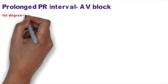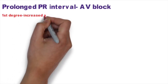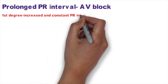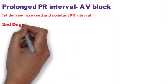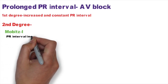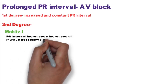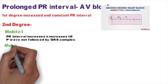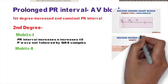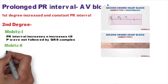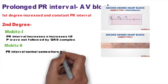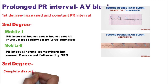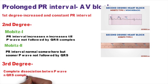There are three types of heart block. In first-degree heart block, the PR interval is regularly prolonged beyond 0.2 seconds but constant. In second-degree heart block, Mobitz type 1 (Wenckebach), the PR interval progressively increases until a P wave is not followed by a QRS complex. In Mobitz type 2, the PR interval may be normal but some P waves are not followed by a QRS complex. In third-degree (complete) heart block, there is complete dissociation between P waves and QRS complexes.